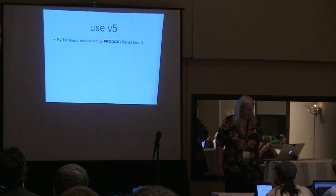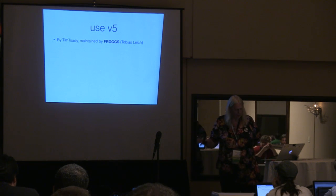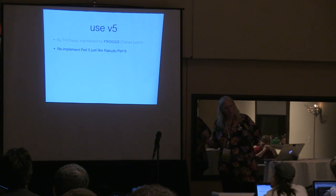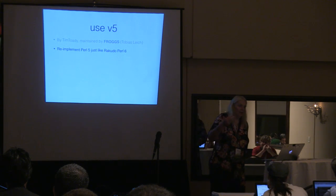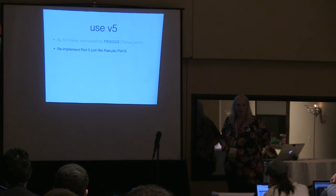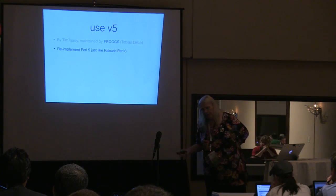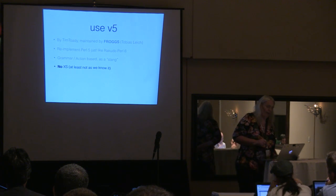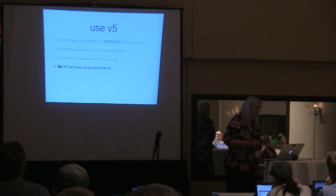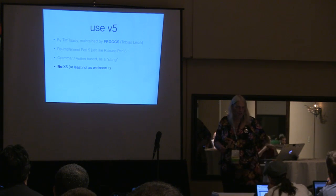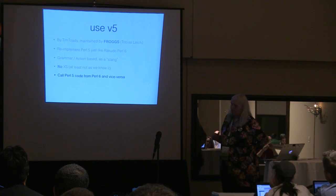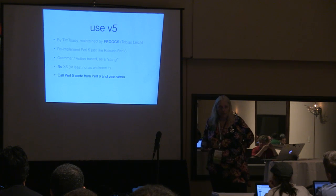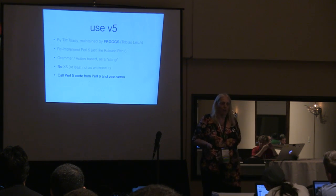Please, if you want to give some money to the guy — he has a small family, two kids growing up, third on the way. The idea of use v5 is to re-implement Perl 5 just like we did with Rakudo Perl 6. Perl 6 has a grammar; it's parsed by Perl 6 into ASTs — abstract syntax trees. You're not going to have XS as we know it, so we can only do pure Perl versions of code. But you will be able to call Perl 5 code from Perl 6, and you already can — your variables are visible between each other because once compiled, it hardly knows any difference between the two.